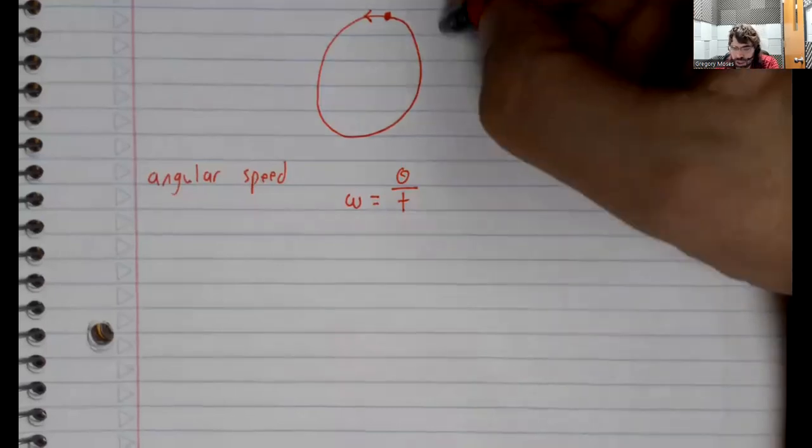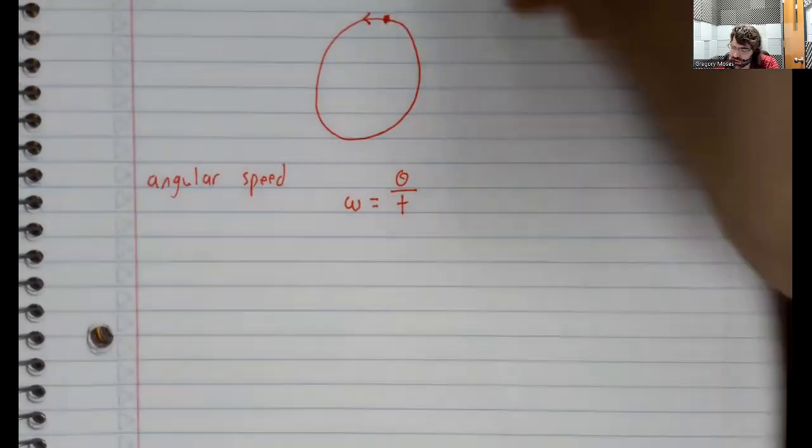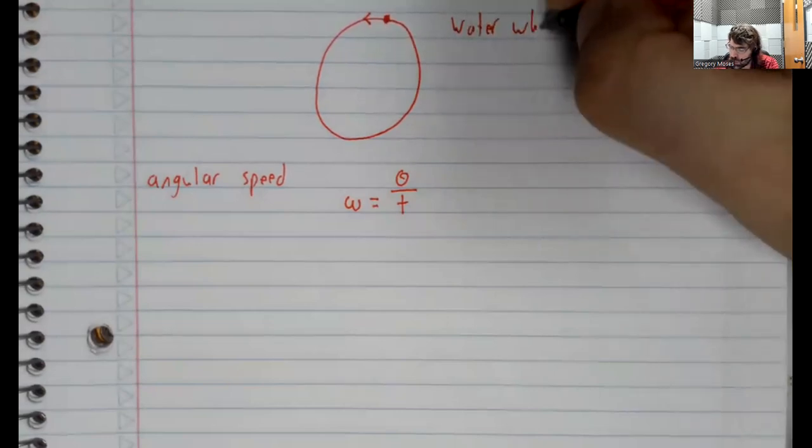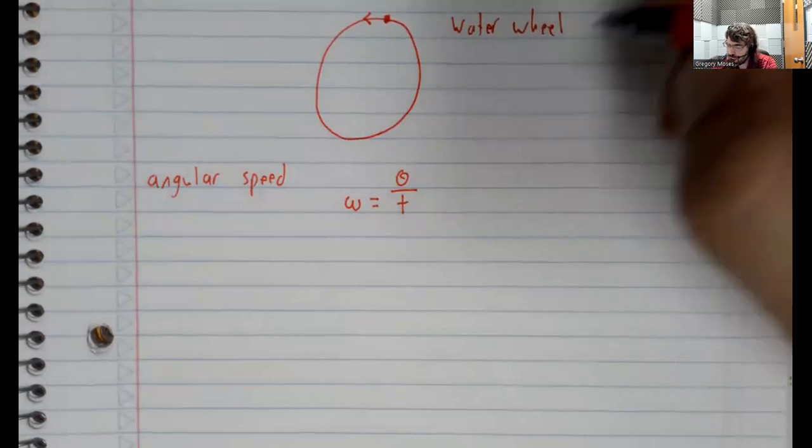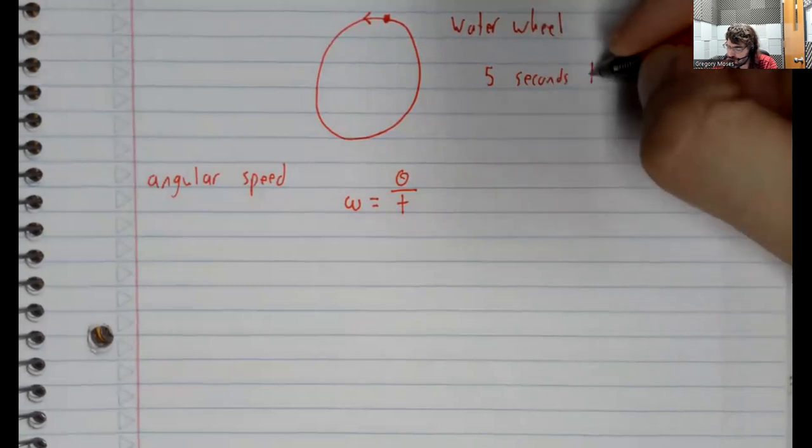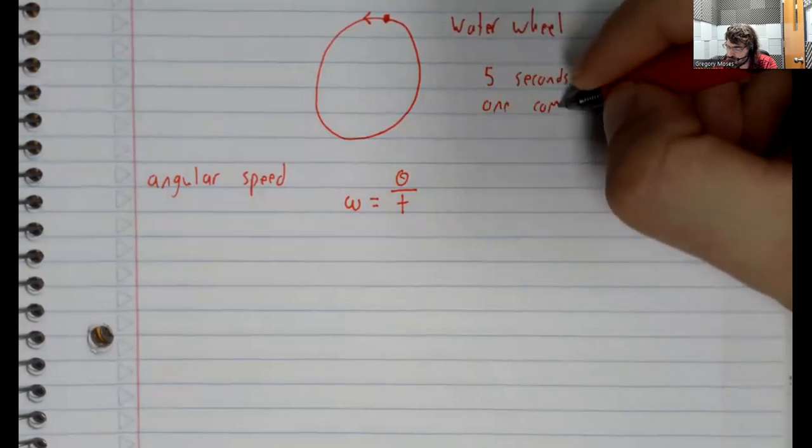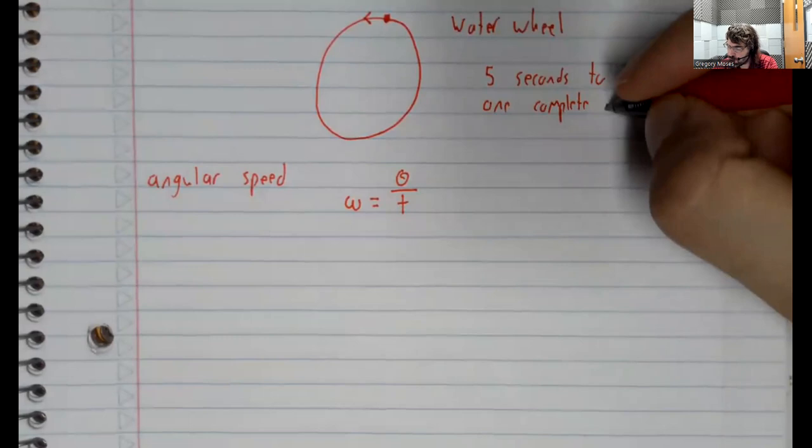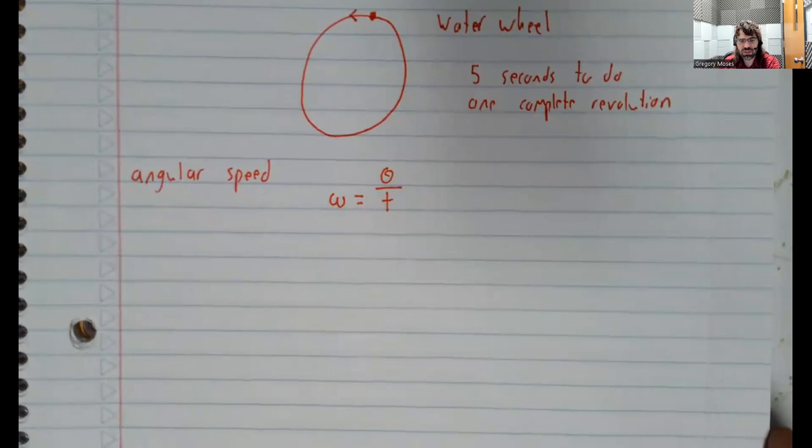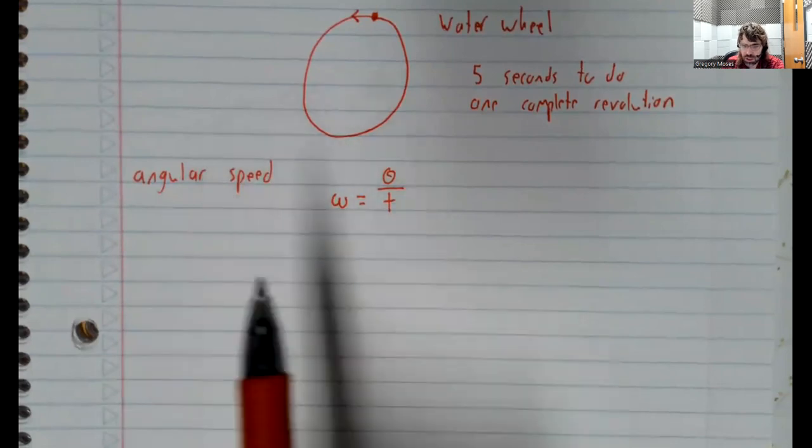Let's do an example. One of the examples from the textbook. Suppose the circle is a water wheel, and it takes five seconds to do one complete revolution. Let's find the angular speed.